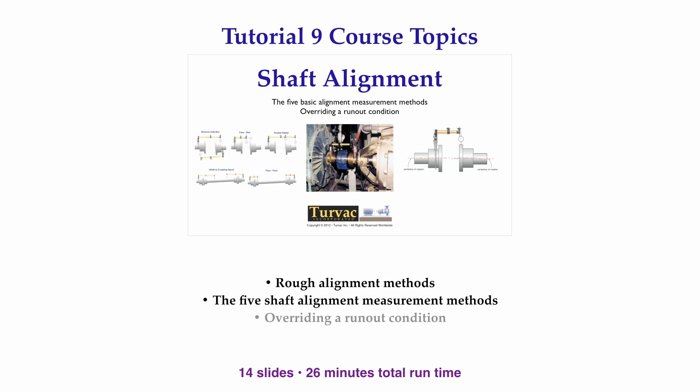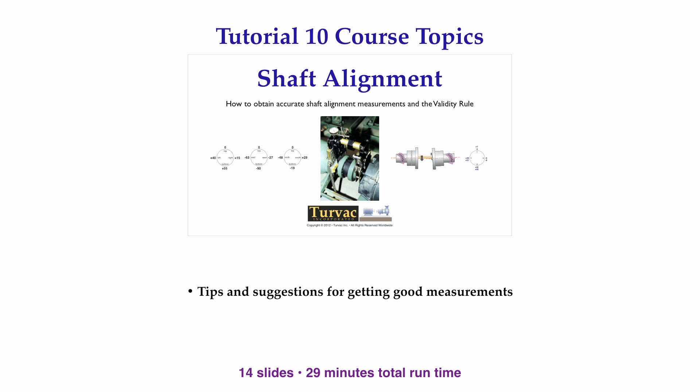In the tutorial on basic alignment measurements, you will see how to roughly align machinery shafts. You will also be introduced to all five alignment measurement methods and shown how to override a runout condition to ensure that the center lines of rotation are collinear. This tutorial will cover several tips, tricks, and techniques to ensure you get accurate alignment measurements. It will also explain what the validity rule is and how it can help you when measurements may be difficult to obtain.